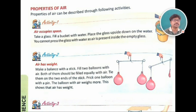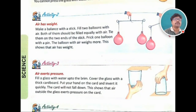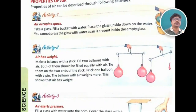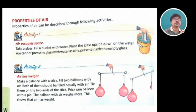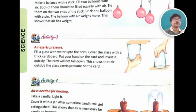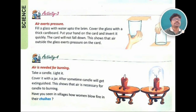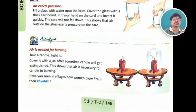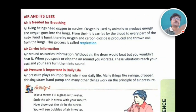These are the properties that air possesses. We have talked about activities based on these properties to prove them — different activities like the images you can see on the screen. Activity one: air occupies space. Air has weight. Air exerts pressure. Air is needed for breathing. We have also talked about air and its uses: air is needed for breathing, air carries information, and air pressure is important in daily life.